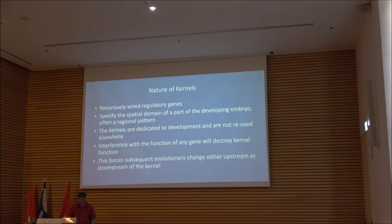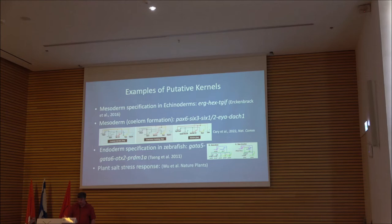The question is: how many kernels are there? The hope in 2006 was that kernels would turn out to be at the base of regional patterning systems in a variety of different clades. That's not really what happened — at least that's not what seems to have happened. There are examples of a few kernels which have been described, many of them having to do with mesoderm specification or endoderm.